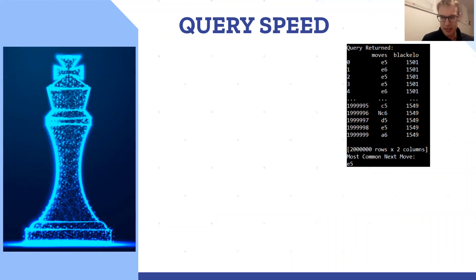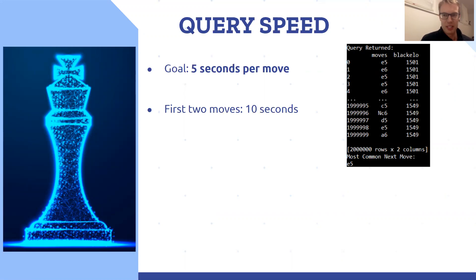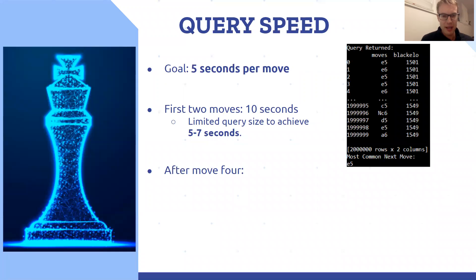The last thing I want to talk about is the query speed of the database. My goal going into this project was five seconds per move — just a rough idea, I don't want the user to wait too long for the database to respond. The first two moves actually took a little over 10 seconds, as you saw in the demo. To address this, I limited the query size to achieve five to seven seconds. That was not necessary after move three or four, because those responses were very fast — less than one second. So thank you, Cassandra, for doing your job well.